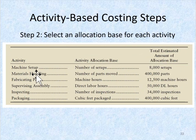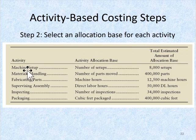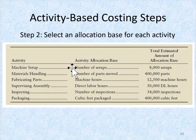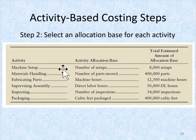The second step is to set an allocation base for each activity. A cost driver for machine setup activities would be the number of setups — the number of times you have to set up a machine to get it ready for a production run is a good indicator of that activity.